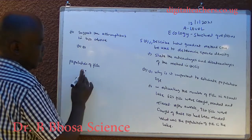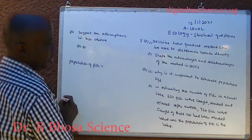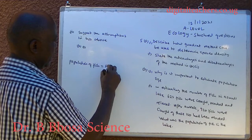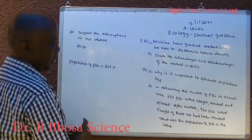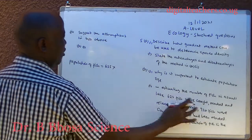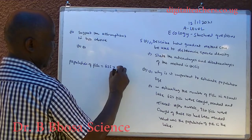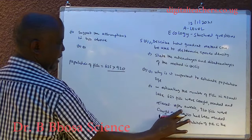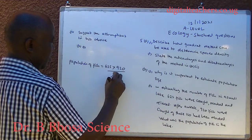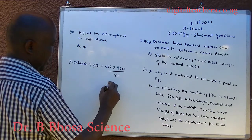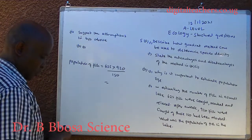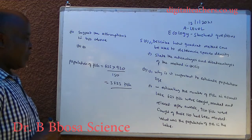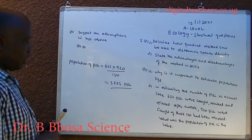B, part two. Population of fish is equal to number of fish caught in the first sample, 625, times the number of fish caught in the second sample, 920, over the number of marked fish in the second sample, 150, which is equal to 3,830 fish.